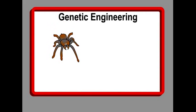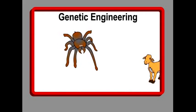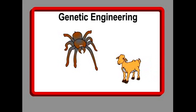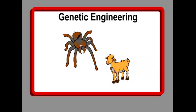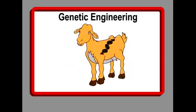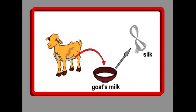In the last 10 to 15 years, agribusiness corporations have experimented with engineering life forms. Some examples are the transfer of a spider gene to goats to produce silk in their milk, and human liver genes to rice to make it resistant to pesticides. This is called genetic engineering.